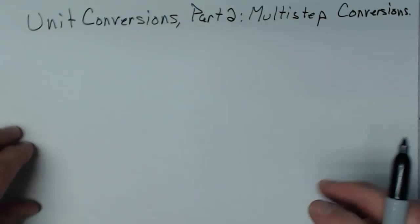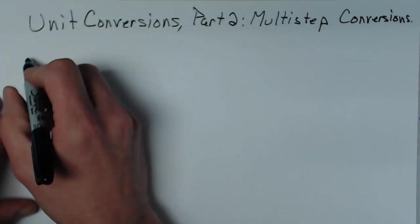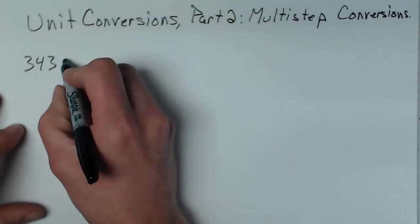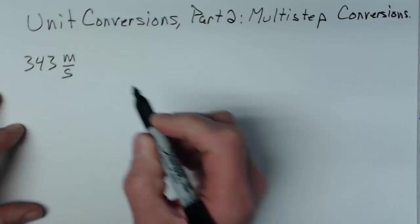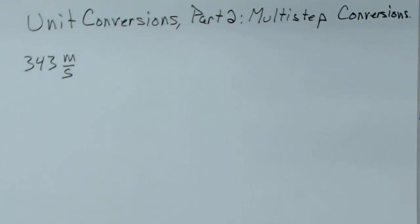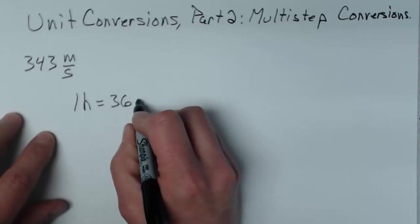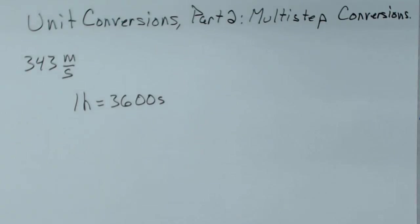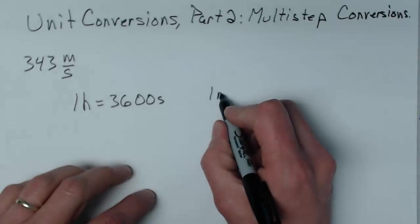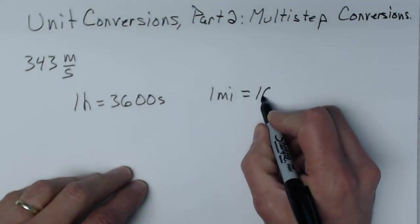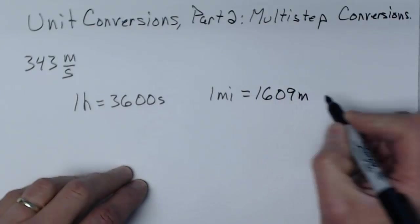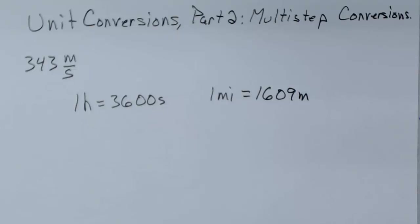Let's do a speed conversion. So happens that the speed of sound in air at a particular temperature is 343 meters per second, and you happen to wonder how fast is that in miles per hour? Well here are a couple of things that you happen to know. You know that one hour is equal to 3600 seconds. So that's a conversion that will let you go from hours to seconds. You also happen to know that one mile is equal to 1609 meters. And so that's a conversion that will let you get from miles to meters.